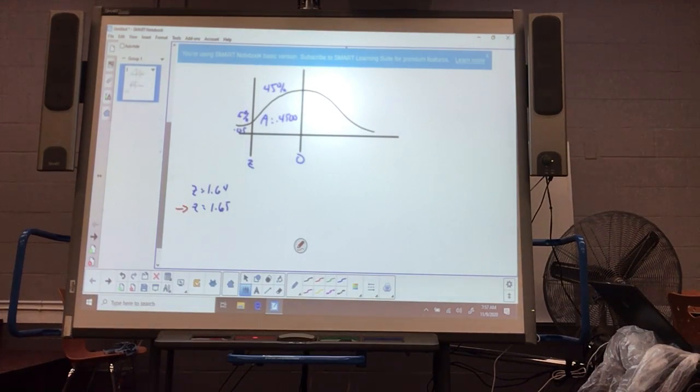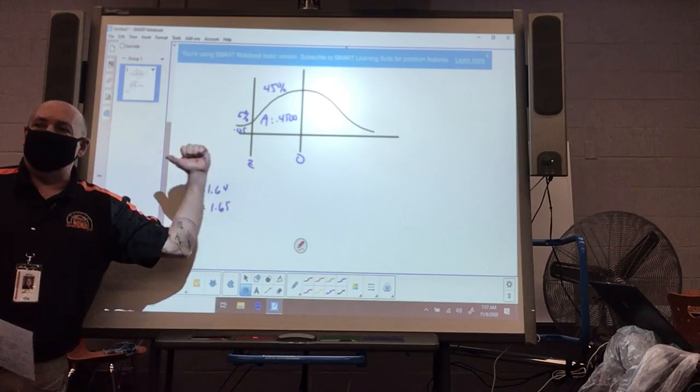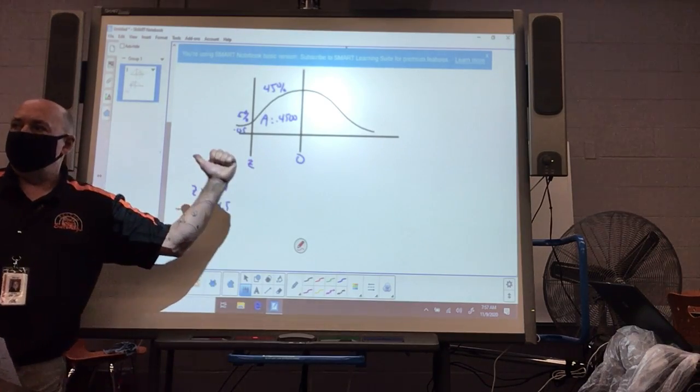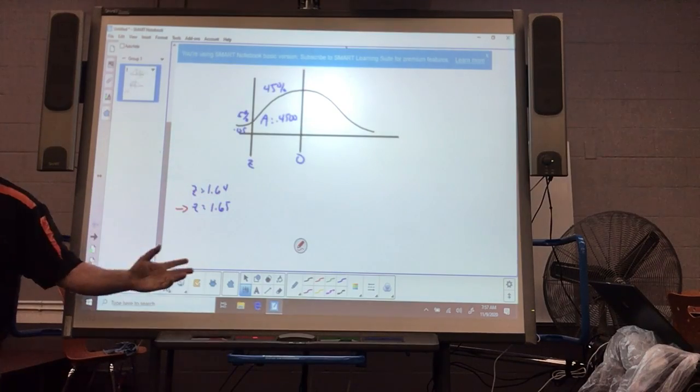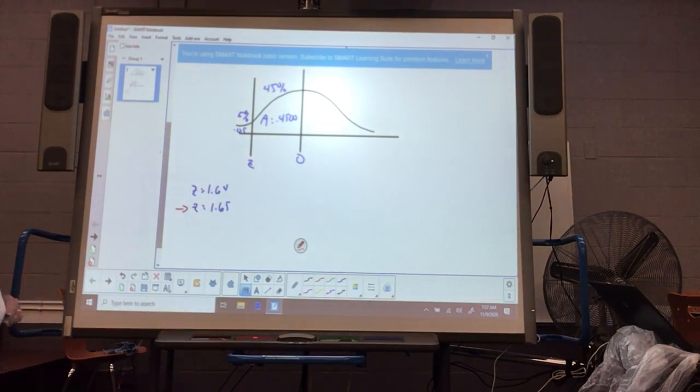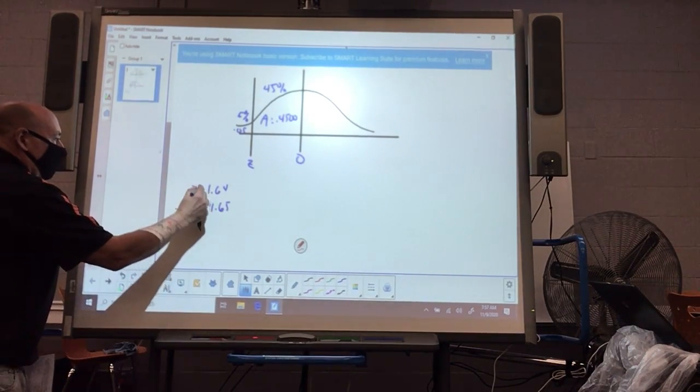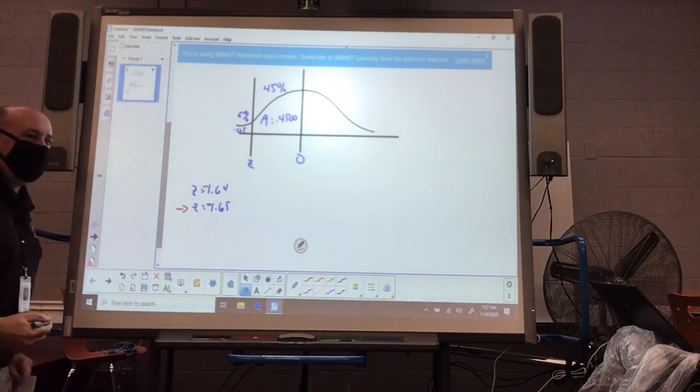But I'm going to go with the 1.65 because that's typically what we utilize. If you use 1.64, I would accept that as a solution also for this test. Next test will be a little bit different. But the one thing that we have to watch out for here is that we are lying left of the zero here. So what do I have to put with the 1.64 or 1.65, Cali? A negative. So these have to be negative because I'm going to the left.